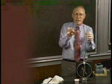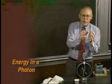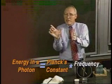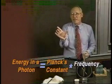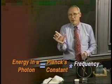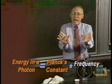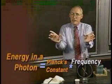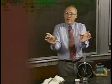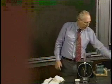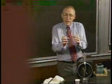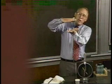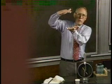Einstein borrowed Planck's formula to explain how much energy was in each one of these little lumps — these little particles of light. The answer from Planck was that the energy in a photon equals Planck's constant times the frequency of the light. The frequency is what we perceive as color; different frequencies we perceive as different colors. So Einstein said if you want more energy in the photons, you've got to change the color — change the frequency. Visible light apparently doesn't have enough energy in the photons.